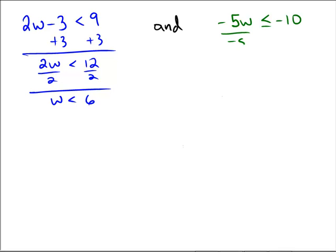And for the other inequality, we have w is bigger than or equal to 2. But this time, the connected word is an AND.